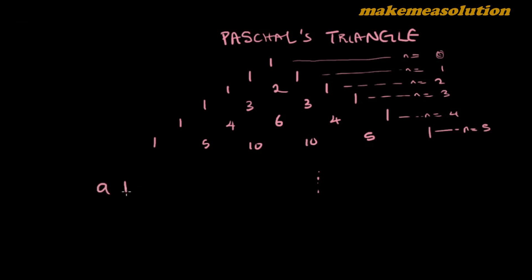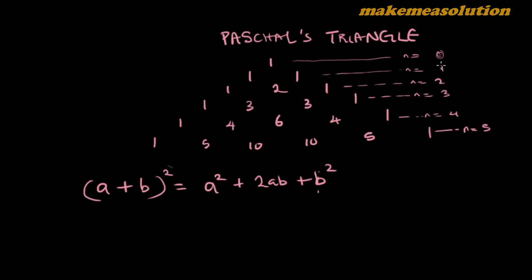For instance, expanding (a+b)² gives a² + 2ab + b². For n=2, the combinatorial coefficients are 1, 2, 1. Observe: the first term has power 2; the second term has the power of a reduced by one and the power of b increased by one, so their sum is still 2; the third term has a⁰b².